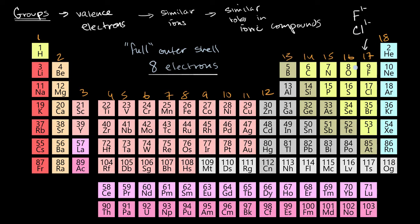If you go one step to the left, the oxygen group — oxygen, sulfur, and on and on — these elements have six valence electrons. It's still easier for them to have a full outer shell by gaining two electrons than by losing six electrons. So these elements also like to attract electrons. You can see oxygen as an oxide anion that has gained two electrons, and sulfur as a sulfide anion.